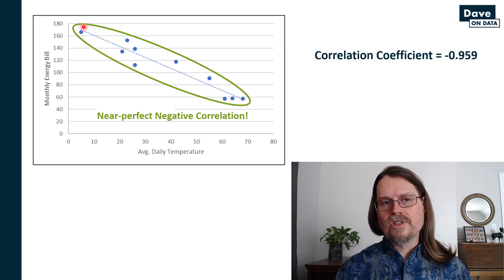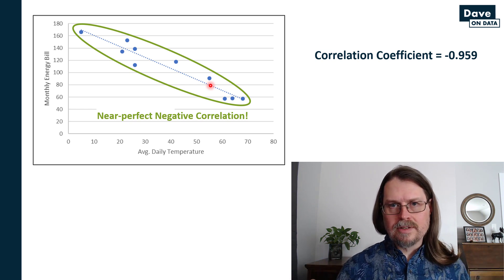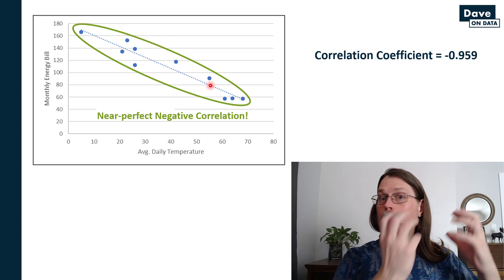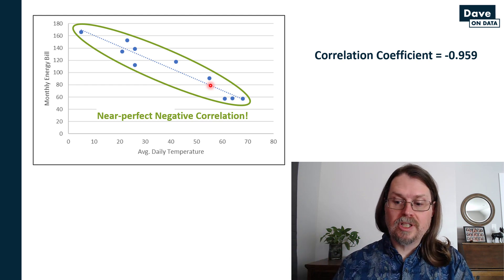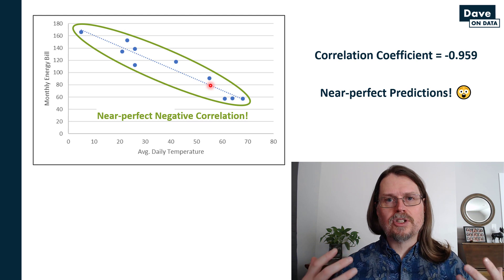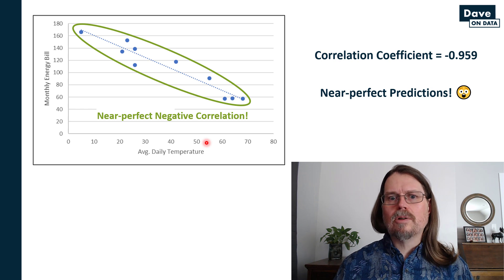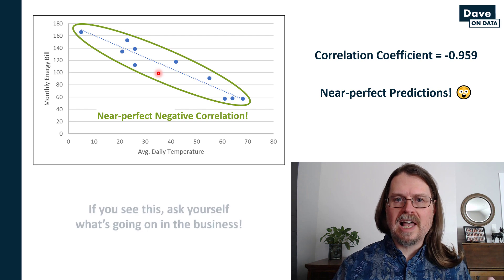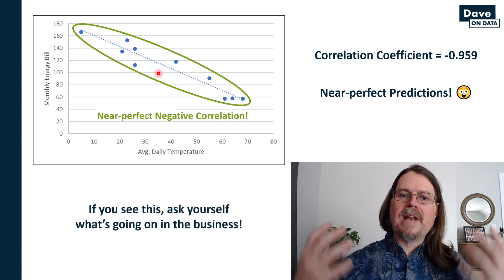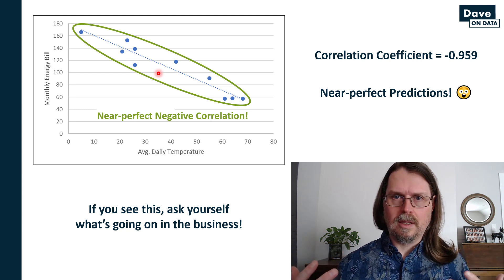What this tells you is you've got data that's nearly in a straight line with a downward slope. As a data analyst, if you have near perfect or perfect positive correlation, or near perfect or perfect negative correlation, the results are the same — you can create near perfect predictions. As the energy company, for example, you could produce a model that pretty accurately estimates the monthly bill based on the average daily temperature. But once again, if you see this in your data, stop and ask yourself why. Is it a data quality problem, or is the problem so simple you're overthinking the analysis?